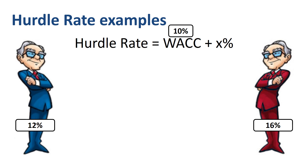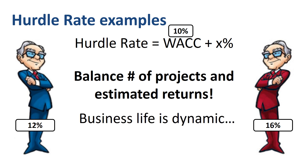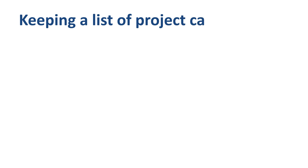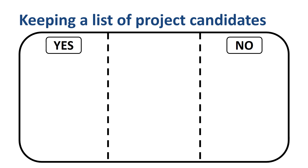Setting a relatively low or relatively high hurdle rate is a balancing act between the number of projects to consider and the estimated returns. The higher the hurdle rate, the lower the number of projects submitted. As business life is dynamic and conditions change all the time, it might be a good idea to keep a running list of project candidates — with three possible responses to investment proposals: yes (approved), no (rejected), and not yet (the parking lot).